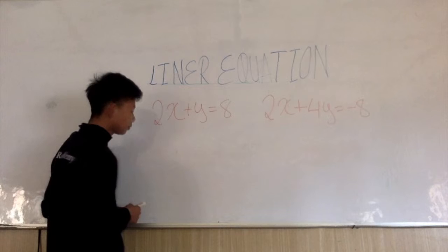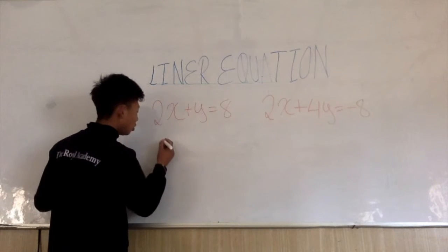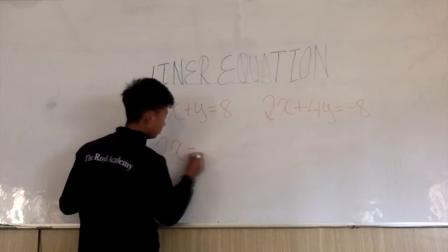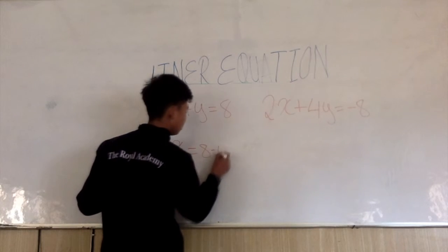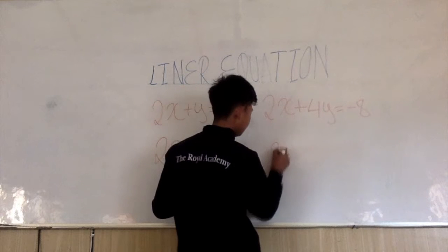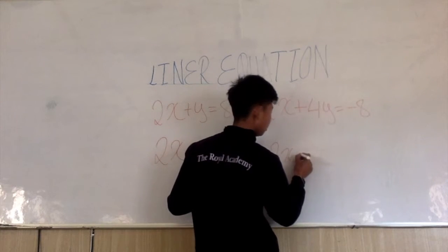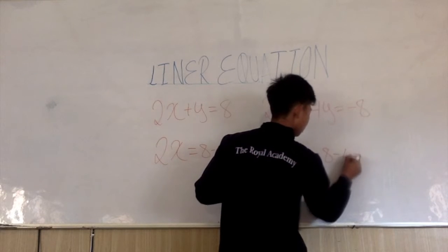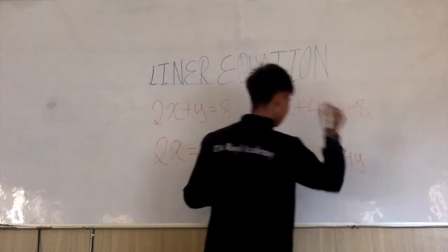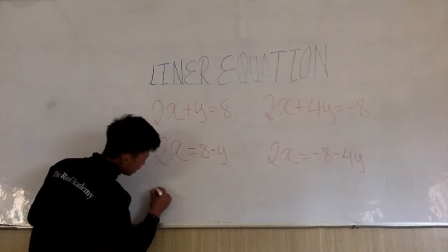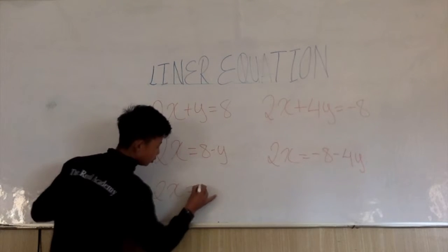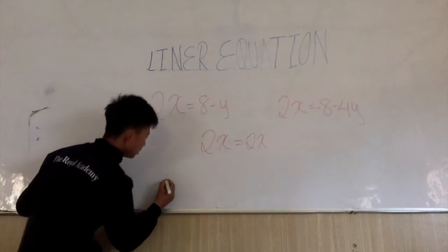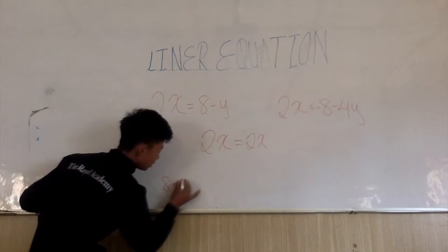Now I am going to keep variables with the same coefficient on the left hand side and all others on the right hand side. We know that 2x is equal to 2x. From the first equation we know that 2x is equal to 8 minus y.